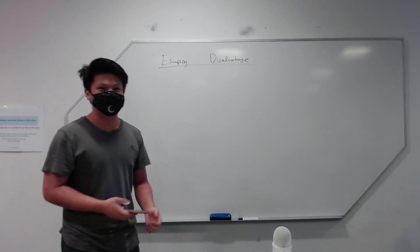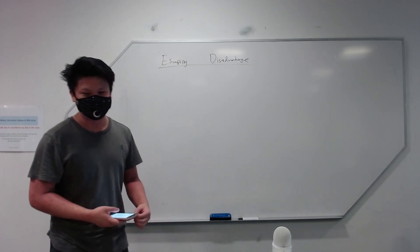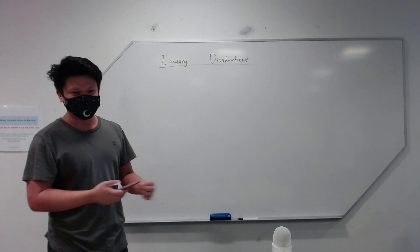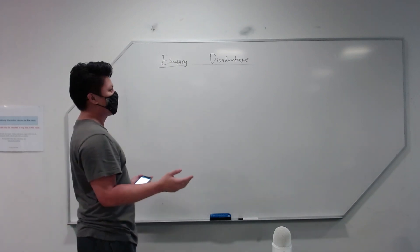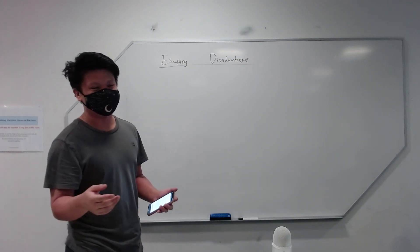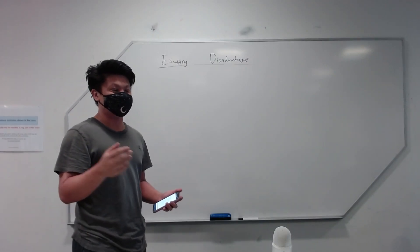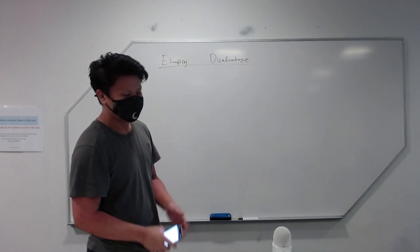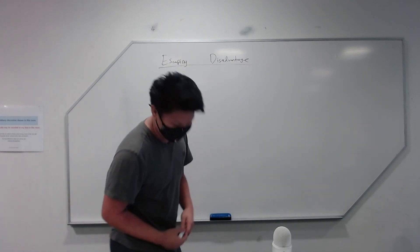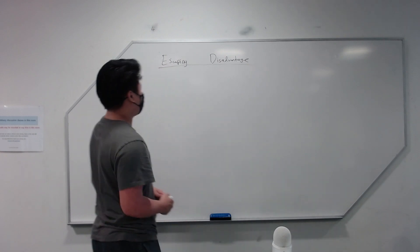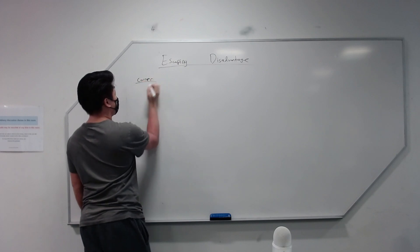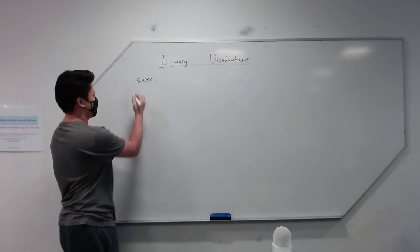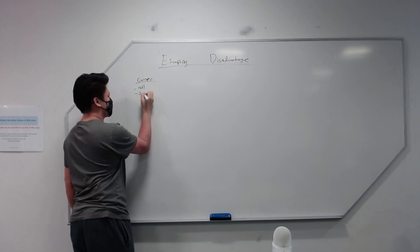We're going to recap first on what we learned at the end of the last one. If you weren't here, it should be pretty easy to understand. Getting out of disadvantage — we did learn the starts of this from last time on getting out of the corner, which is also technically a disadvantageous position. To recap, getting out of the corner: the options you have are roll, jump, and attack. These are your basic options.